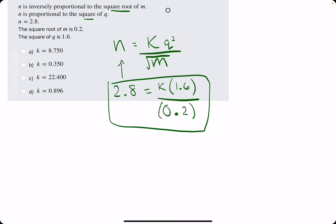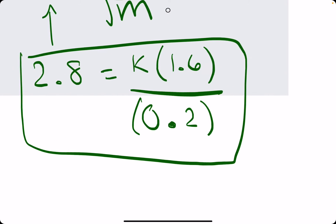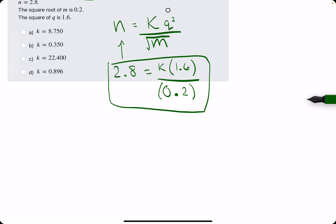And our goal is to isolate k, get k by itself on that right side. So we are going to multiply both sides by 0.2, while simultaneously dividing by 1.6,